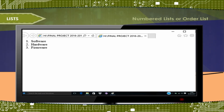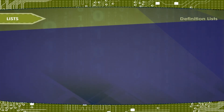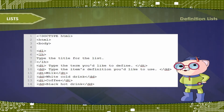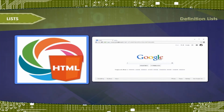Definition lists, coded as the DL tag, usually consist of alternating a definition term — coded as DT — and a definition description — coded as DD. Web browsers generally format the definition on a new line and indent it.